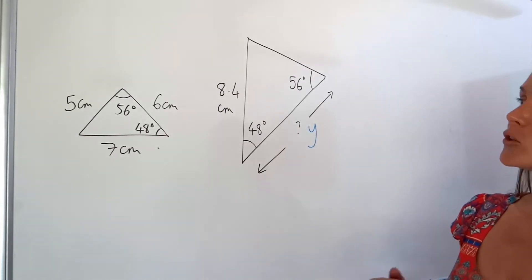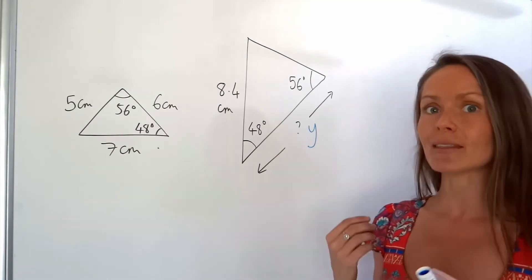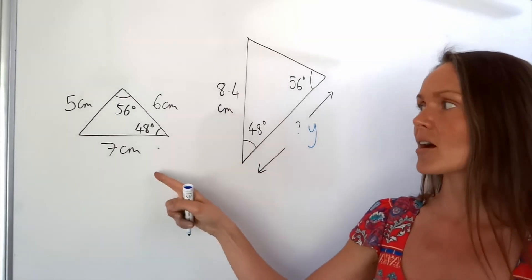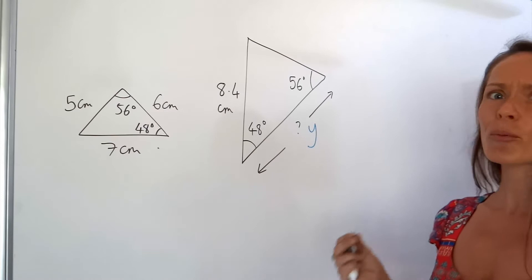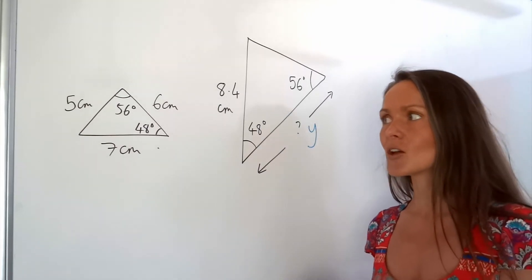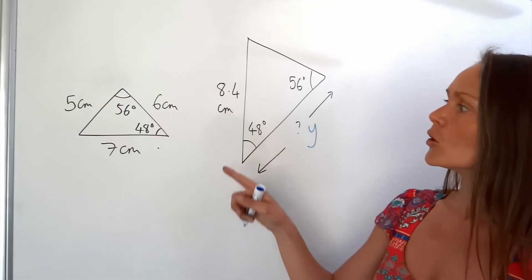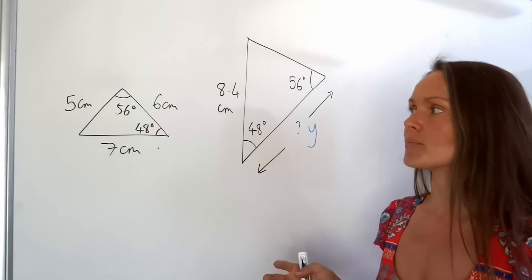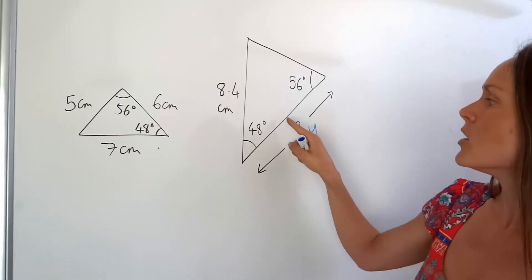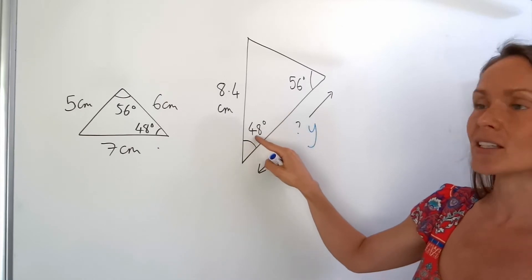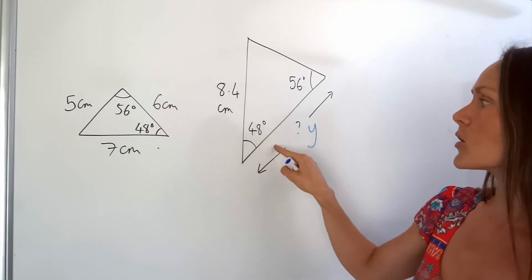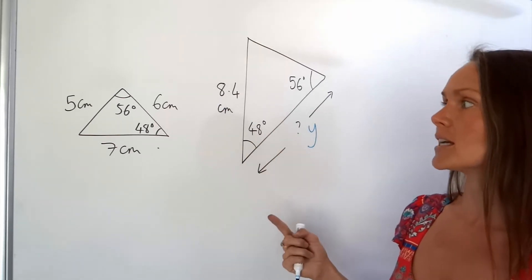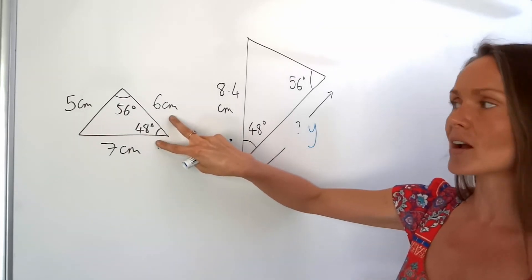When you divide corresponding sides you get the same scale factor, so I'm going to divide this large side with the corresponding side in the small triangle. The problem is it's not so obvious which side corresponds to which, because not only is this triangle bigger, but it's also been rotated. So I'm going to look at the angles — the sides either side of 48 degrees are the sides I'll use in the big triangle, which means I need the same sides either side of 48 degrees in the small triangle.